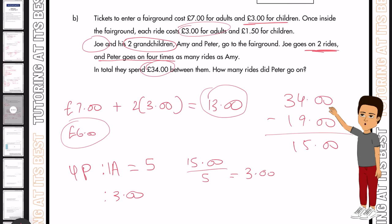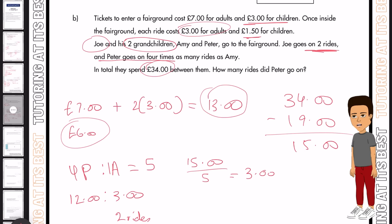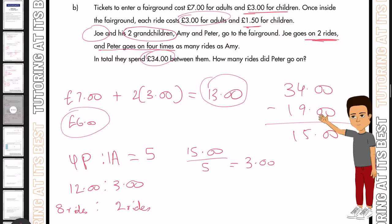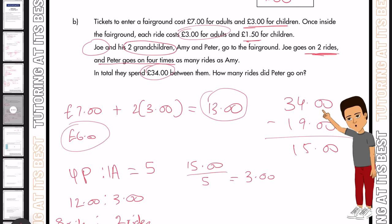So we know, whilst Amy is £3, which is seen as two rides, as one ride is £1.50, then we're going to times that by four and that's £12 for Peter. And that's going to be eight rides in total. And that again is four times. So we now know that the answer to part B is eight rides. So once again, pause the video at any given time, attempt the question and then press play to see if you've got the same value.